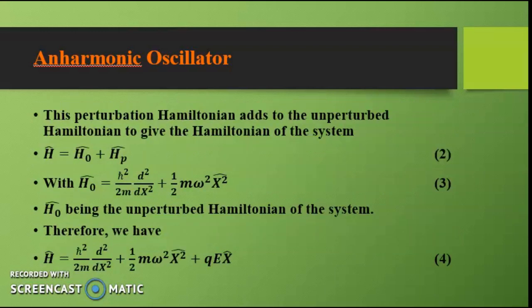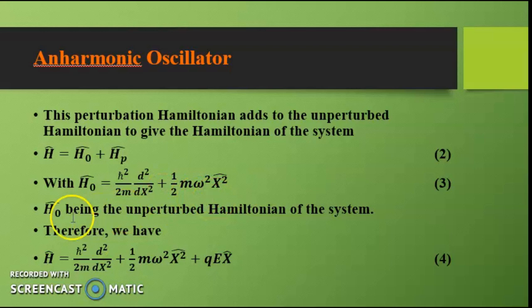This perturbation Hamiltonian adds to the unperturbed Hamiltonian to give the total Hamiltonian of the system: H = H0 + Hp, where H0 = −(ℏ²/2m)(d²/dx²) + ½mω²x² is the unperturbed Hamiltonian of the system.